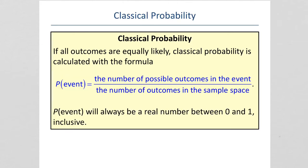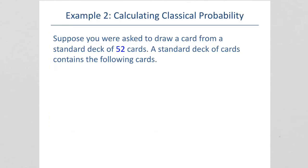And, classical probability is the number of possible outcomes in the event divided by the number of outcomes in the sample space. So, how many possible outcomes could there be over the total possible outcomes?